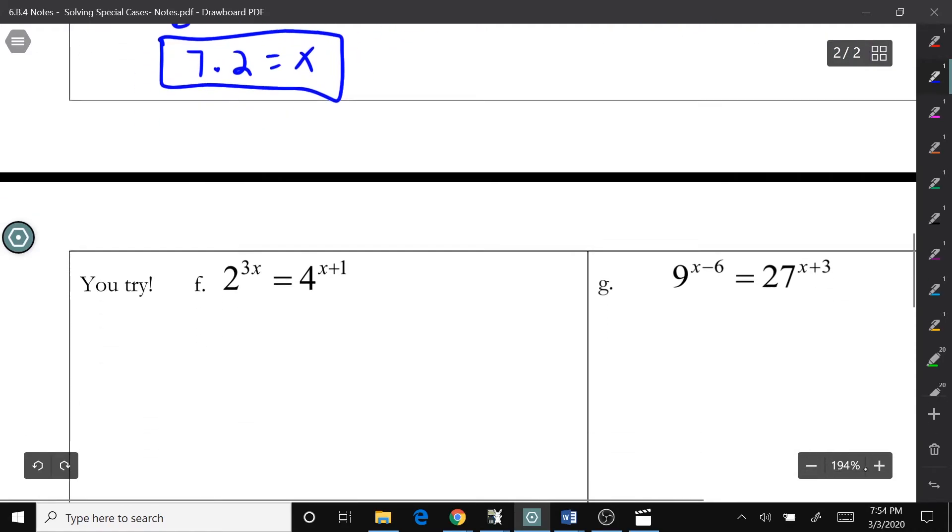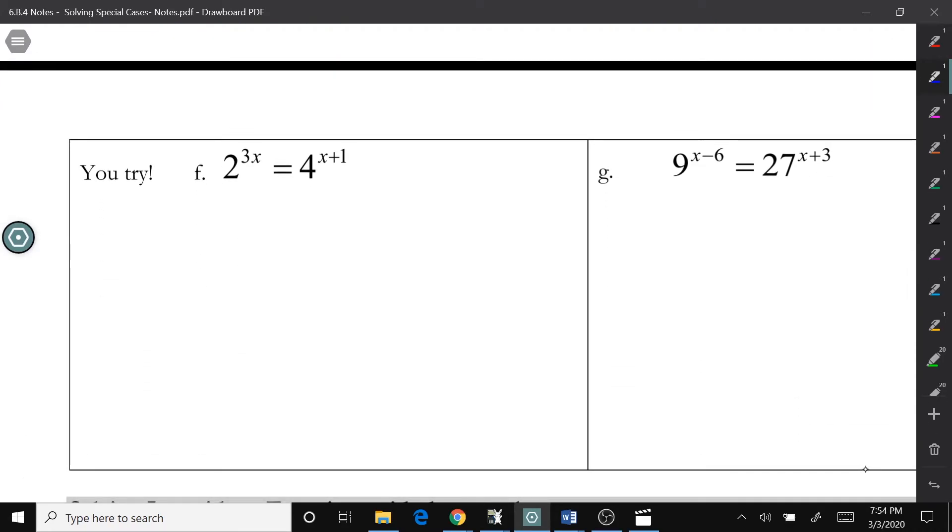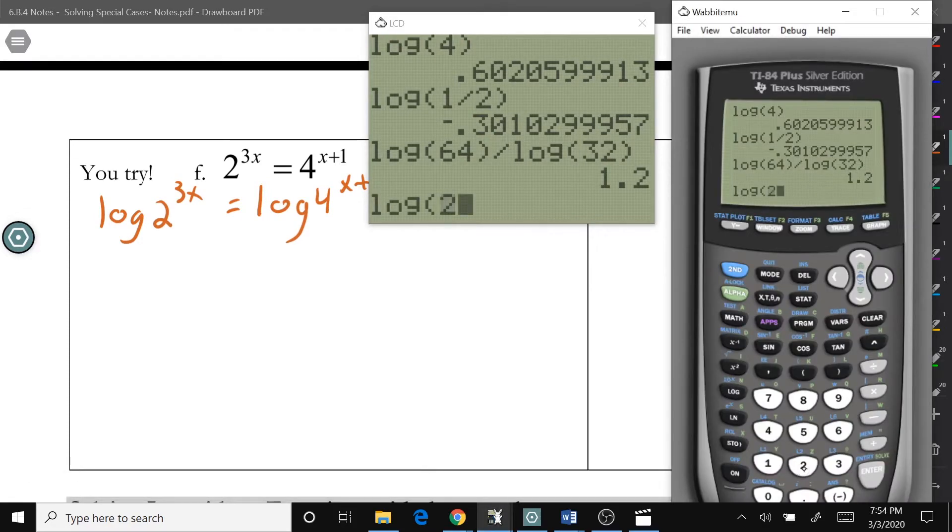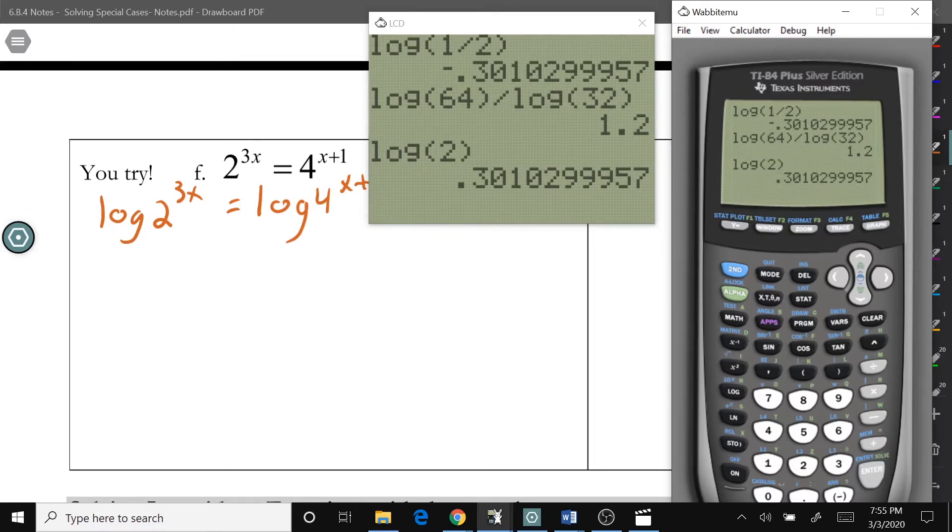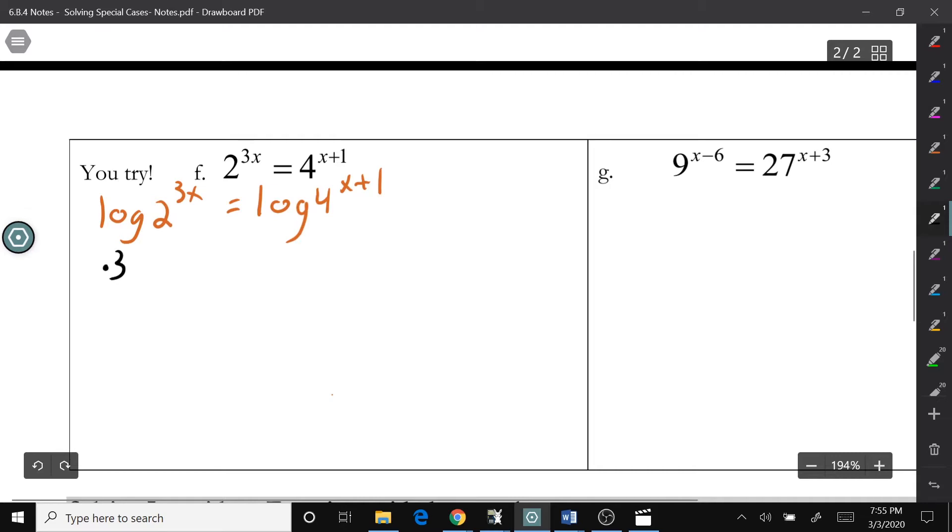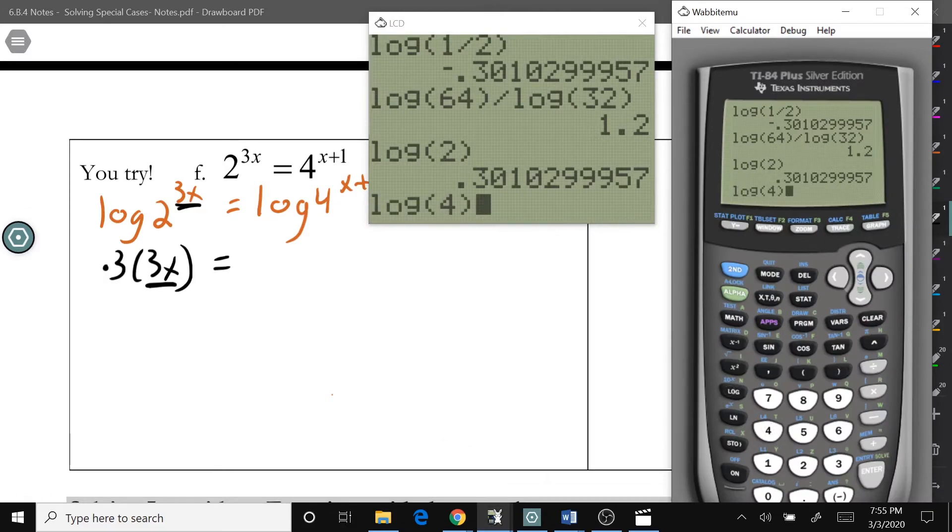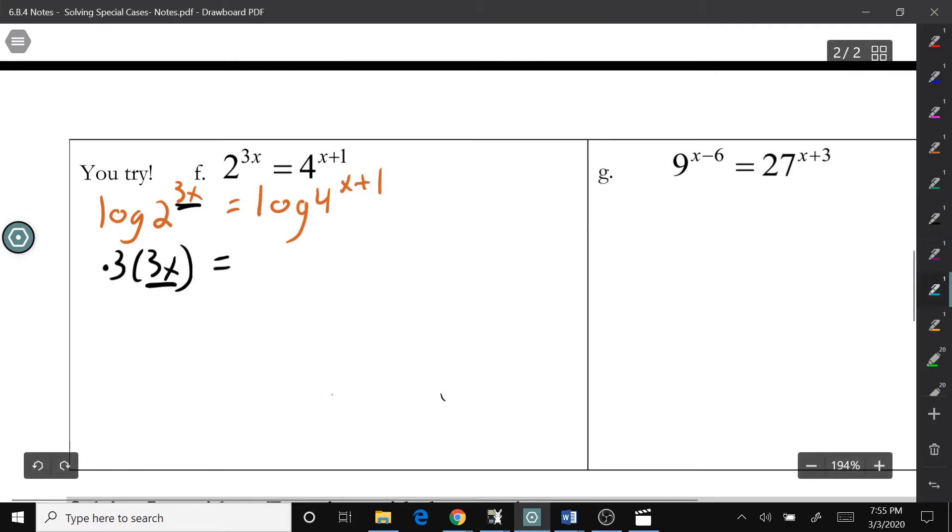Alright. On to the next page. Now, here, the two bases are not the same. So, I would recommend taking the log of both sides. So, log 2 to 3x equals log 4 to the x plus 1. So, again, in my calculator, I'm going to type in log 2. And that's 0.30. So, 0.3 times 3x, the exponent just comes down. So, 0.30 equals log 4. We get 0.60. It's 0.6 times x plus 1.